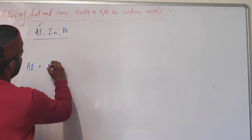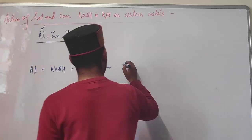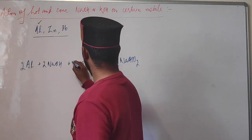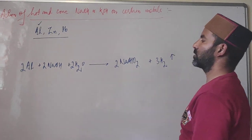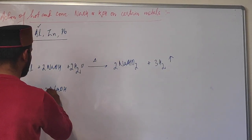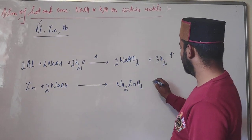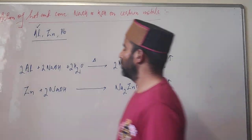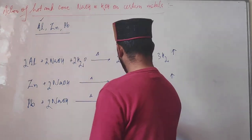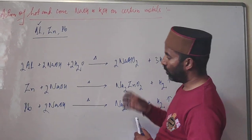Aluminium reacts with hot concentrated NaOH to give sodium meta-aluminate (NaAlO2) and hydrogen gas. Zinc also reacts with hot concentrated NaOH (with slight heating) to give sodium zincate (Na2ZnO2) and hydrogen gas. Lead similarly reacts to form sodium plumbite (Na2PbO2) and hydrogen gas.